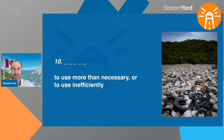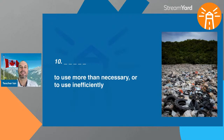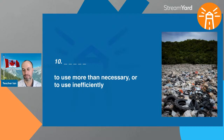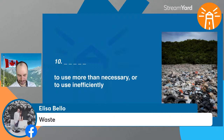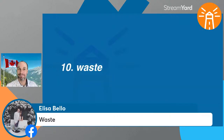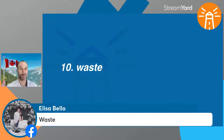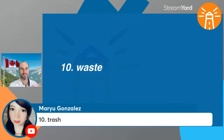Last vocabulary word, number ten: to use more than is necessary, or to use something in a wasteful, inefficient way — or things that you throw out that nobody uses anymore. Alyssa got it — waste! Control your waste, don't waste things: don't waste food, don't waste water, don't waste electricity. And it's also the name for the things we get rid of — household waste or trash. Trash is waste that we don't want anymore.